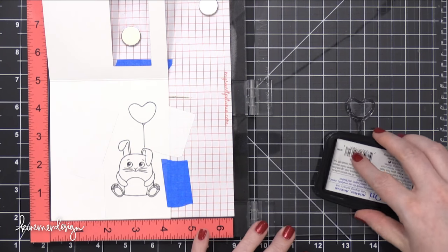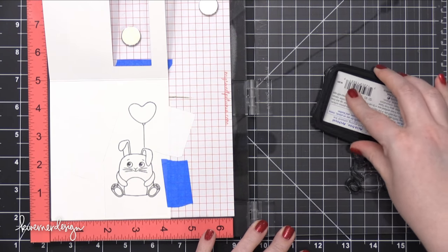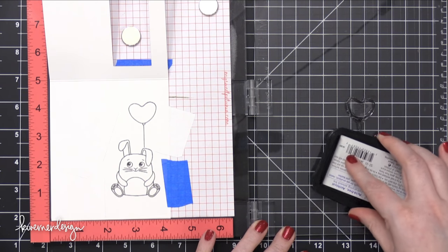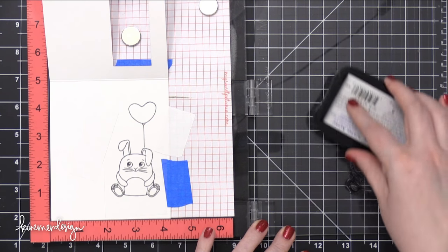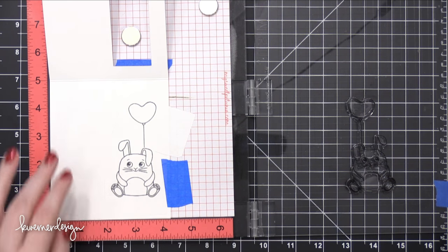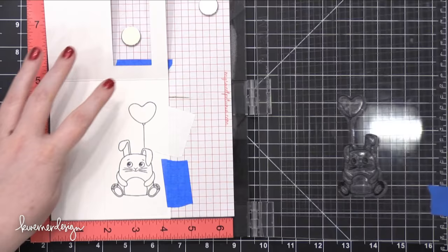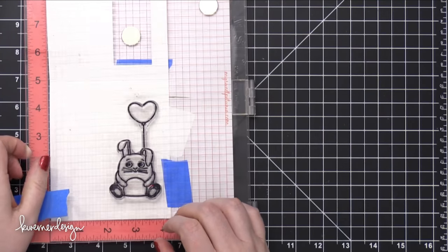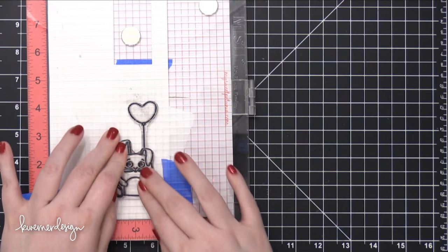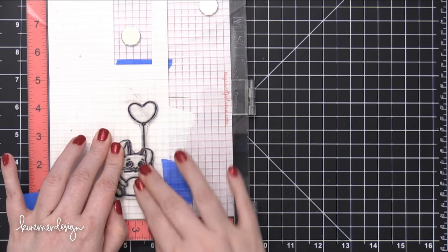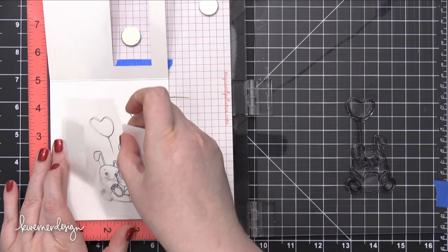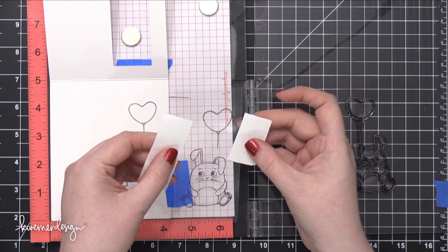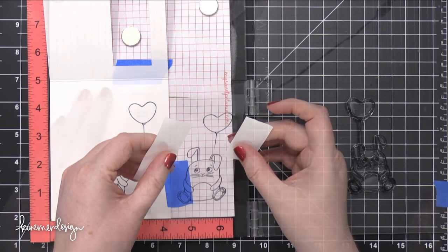Instead, I'm going to switch to Stazon Jet Black ink. This is a really sticky ink, so you want to make sure to tape down that acetate or use some Post-it tape to tape it down and hold it in place. Because as I swing this over and stamp the bunny and the heart balloon, when I pull up, it's going to want to pull up that sheet of acetate with it. It's going to be really sticky, so you want to tape it down just in case you need to stamp it again. But in my case, it was pretty okay.